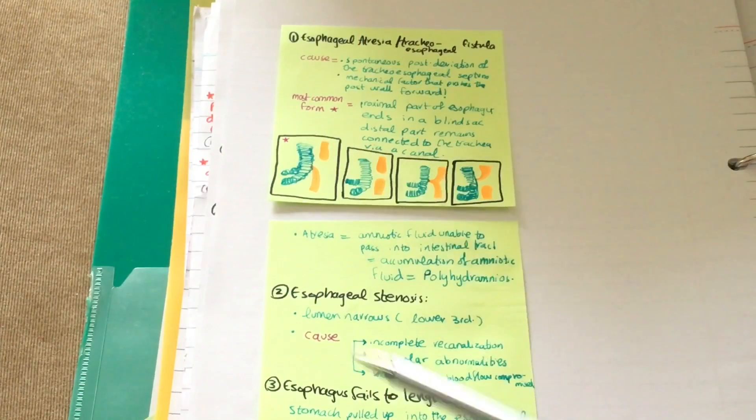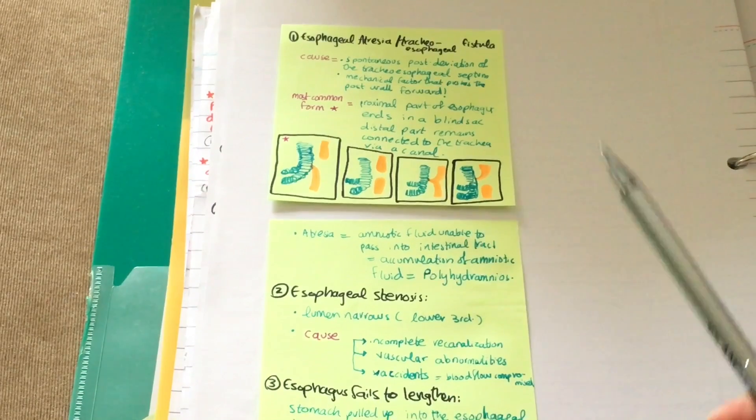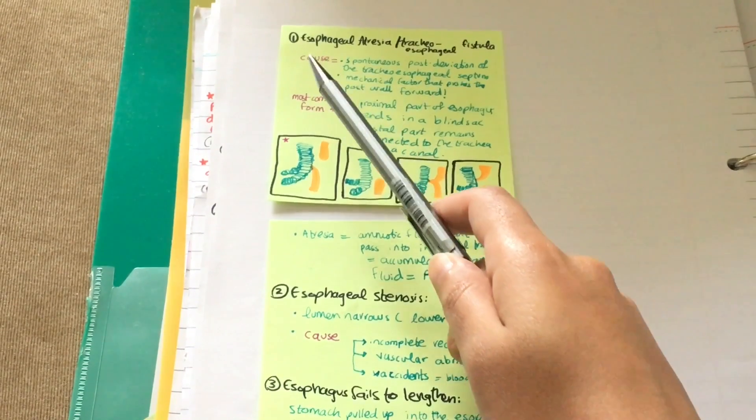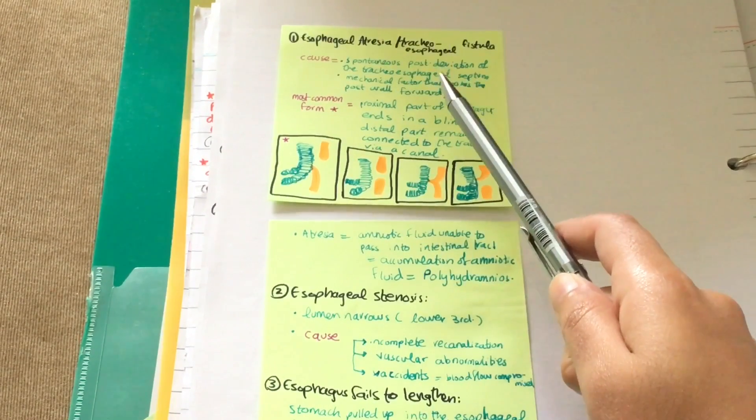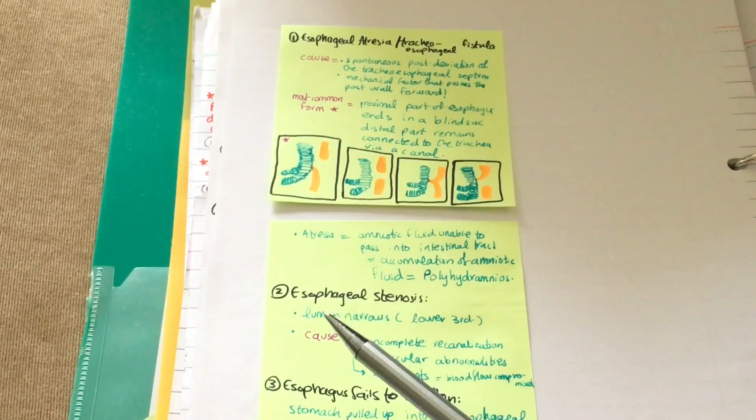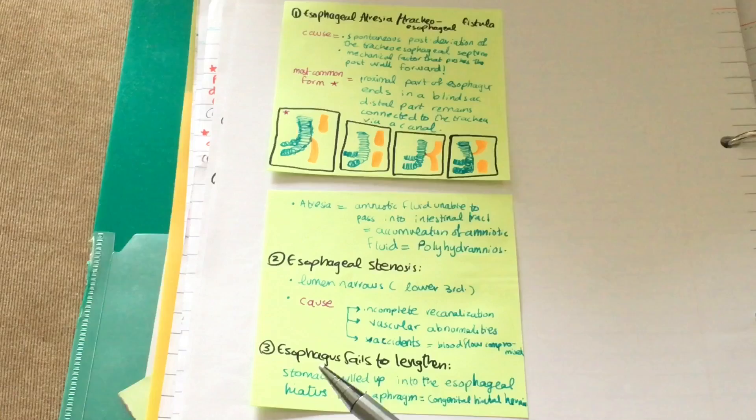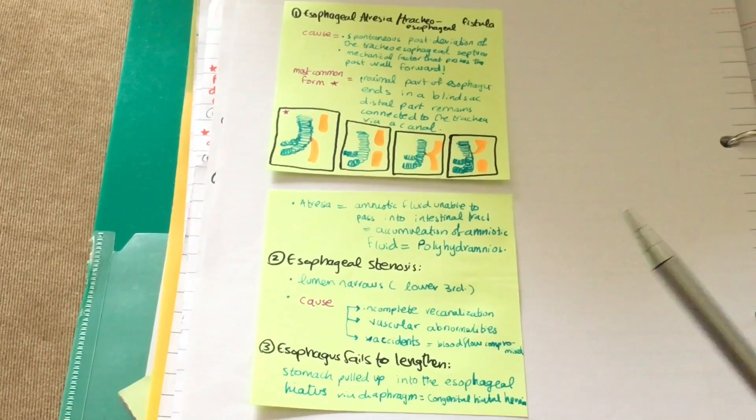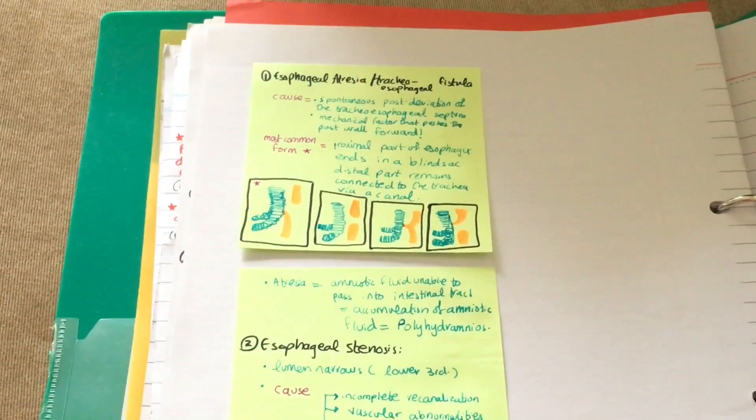Sometimes this results in anomalies. There are three anomalies related to the development of the esophagus: esophageal atresia or tracheoesophageal fistula, esophageal stenosis, or the esophagus may fail to lengthen. Let's get into the details.